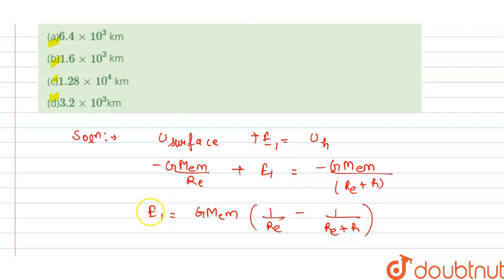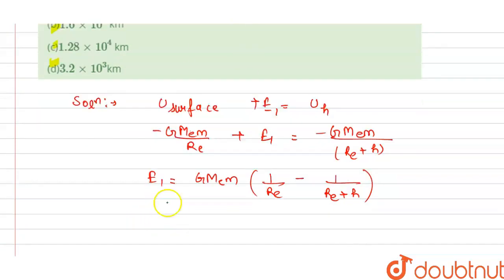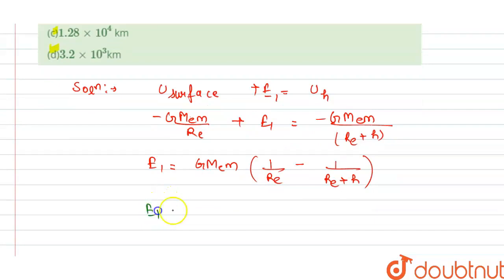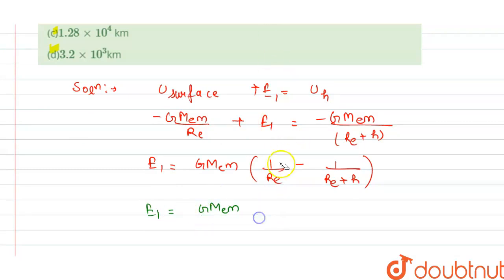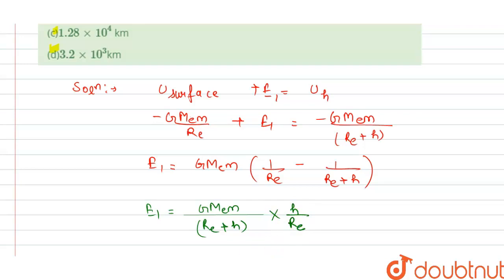From this we can write E1 = GMₑm·h / [R(R + h)], where R is the radius of Earth and h is the height.